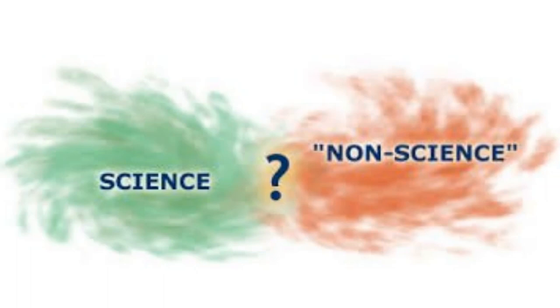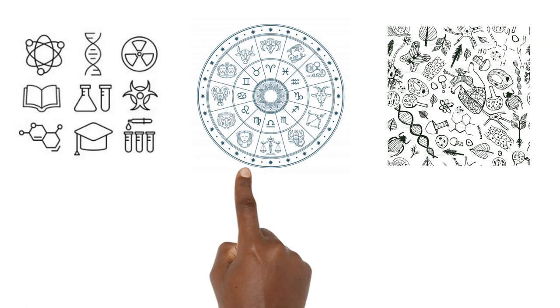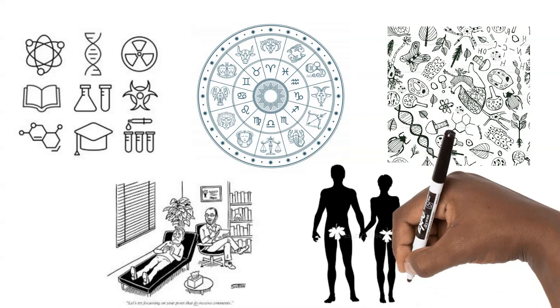For example, is astrology science? Is chemistry science? Is biology science? Is psychoanalysis science? Is creationism science? Ultimately, the aim of the philosophy of science is the study of the scientific method itself.